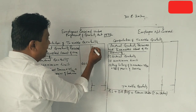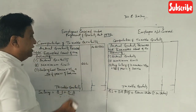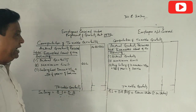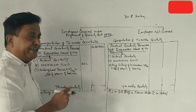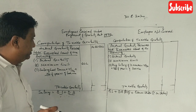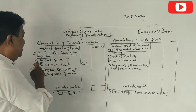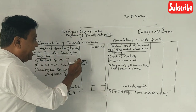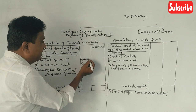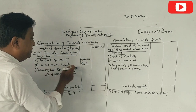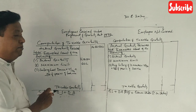He received 14 lakh rupees as gratuity. The rules for computation of taxable gratuity: actual gratuity received is 14 lakhs, the maximum limit is 20 lakhs.